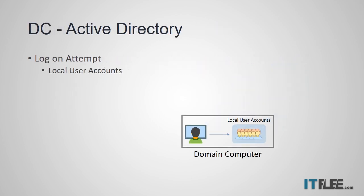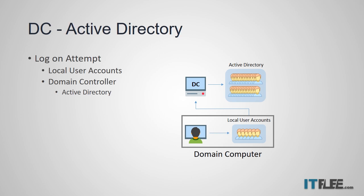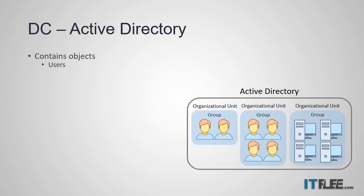When a user attempts to log into a domain computer — that is any computer joined to a Windows domain — the computer first looks for a matching local user account that resides on the computer itself. If it does not find one, then it reaches out to its domain controller and attempts to find a domain user account stored in the directory service Active Directory. AD is a tool to manage domain users, computers, printers, file shares, groups, and more. These are all considered AD objects.